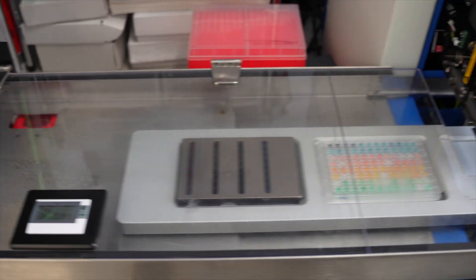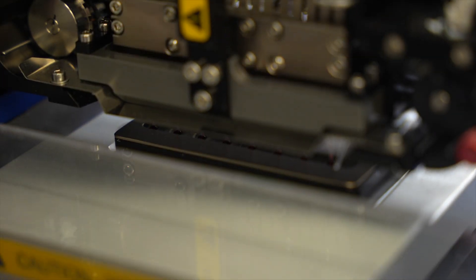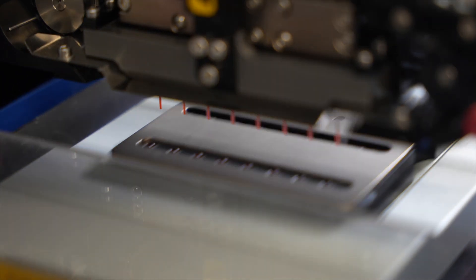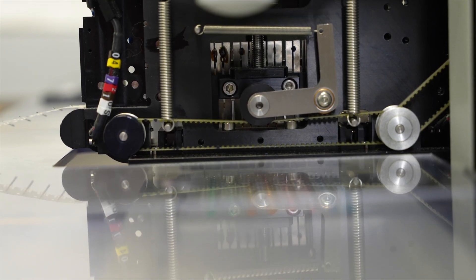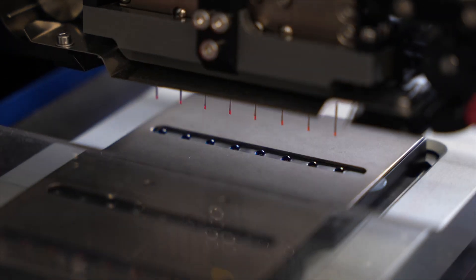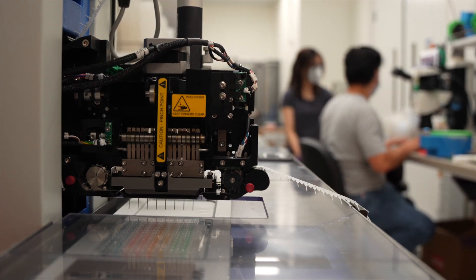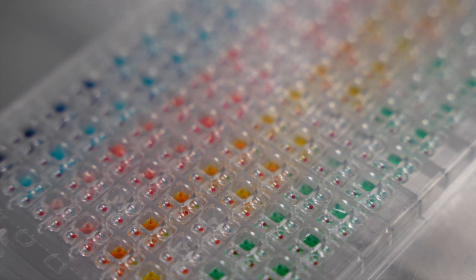This robot is a liquid handler. It helps us set up crystallization experiments so that we can try up to 288 different conditions in a single tray. This robot is fast, but that's not just a convenience. It's actually very important to set up each tray as quickly as possible. If you move slowly, the tiny drops of liquids we're using might evaporate before we seal the tray.